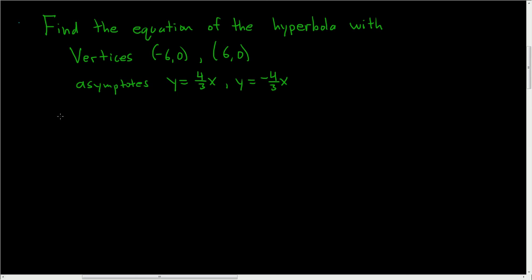Find the equation of the hyperbola with the given vertices and asymptotes. Let's go ahead and do it. We'll start by drawing a picture.